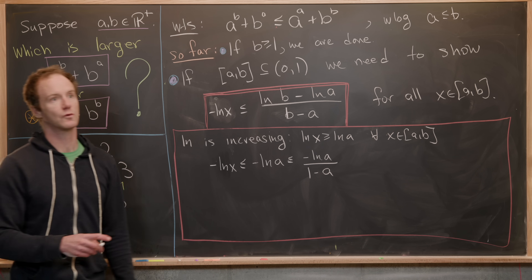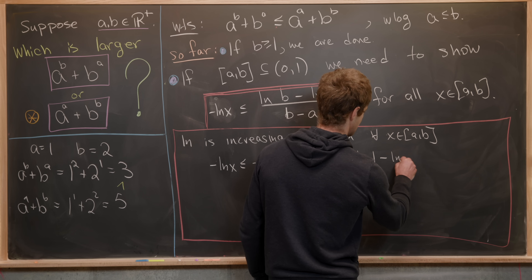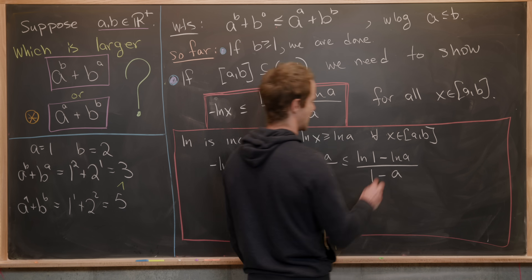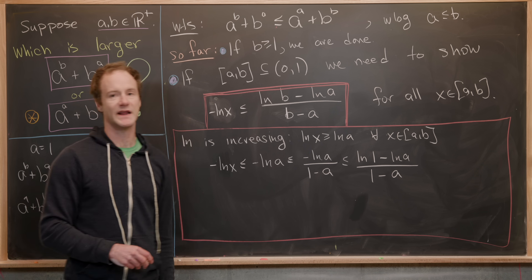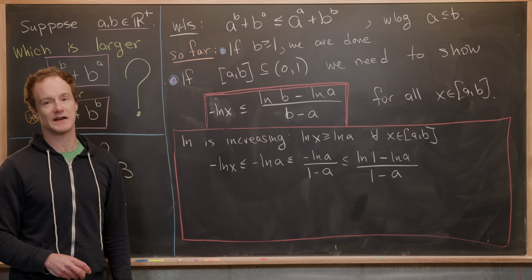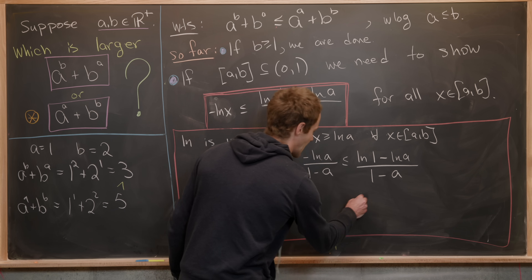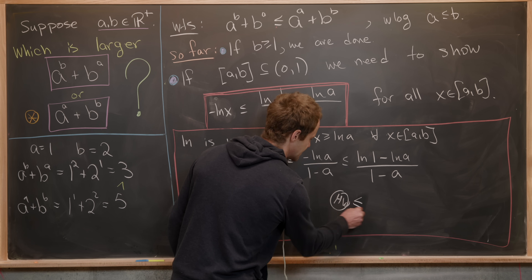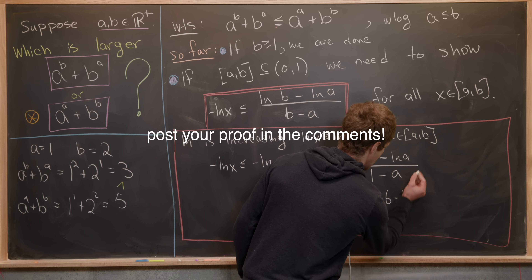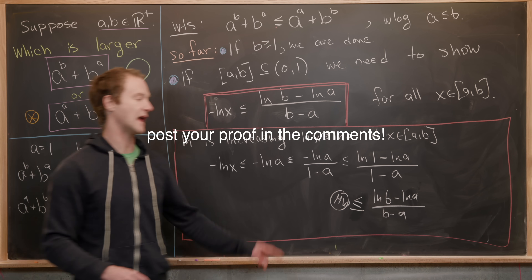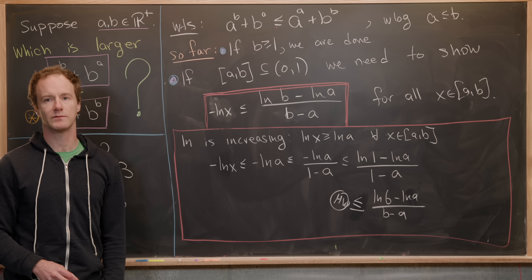Since ln(1) equals zero, we can rewrite this as (ln(1) minus ln(A)) over (1 minus A). We almost have the right inequality — we have ln(1) minus ln(A) over 1 minus A, but we want ln(B) minus ln(A) over B minus A. The homework is to prove that ln(B) minus ln(A) over (B minus A) is bigger than the expression above, which finishes off this inequality and the whole problem.